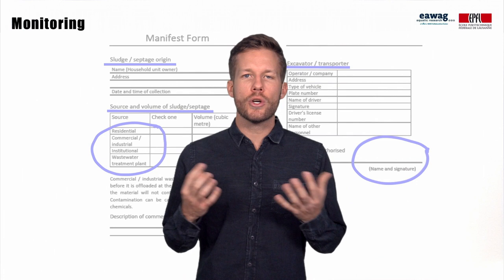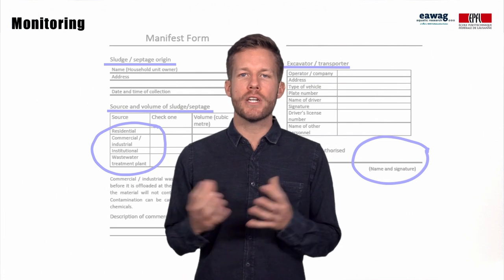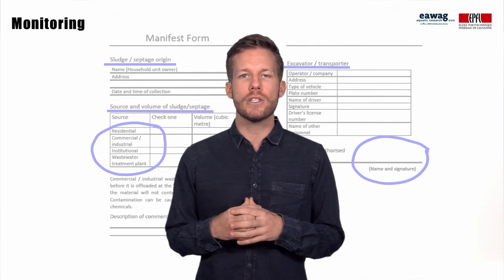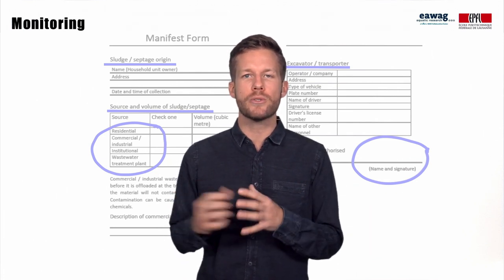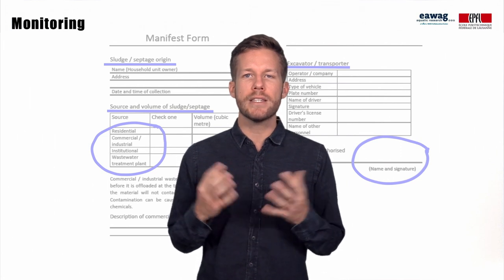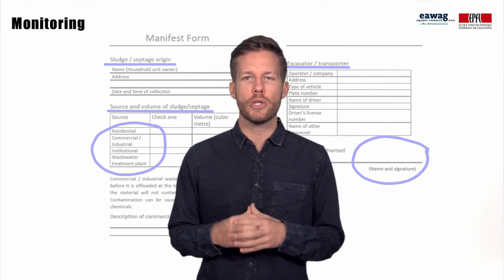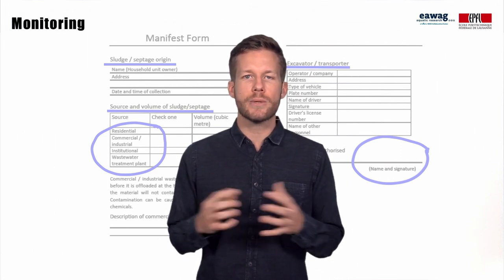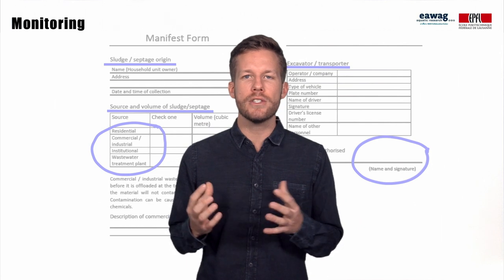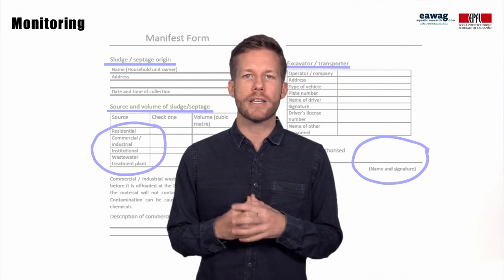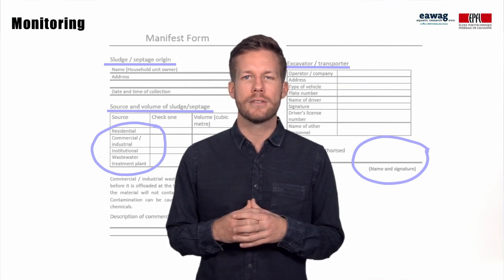The contribution of sludge from different on-site sanitation technologies — for example septic tanks versus pit latrines — could also be important, as it has implications for treatment, such as the solid-liquid separation efficiency on drying beds or in settling thickening tanks.